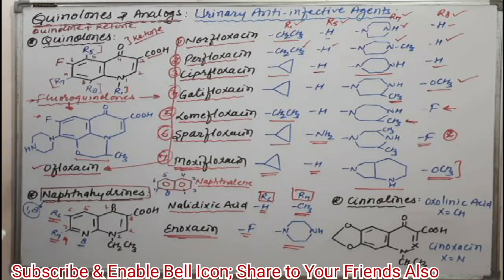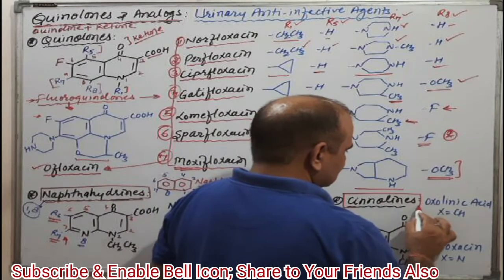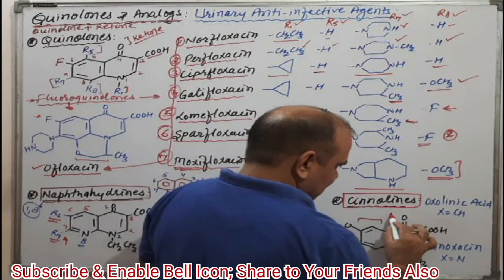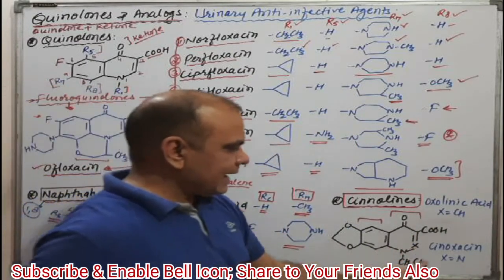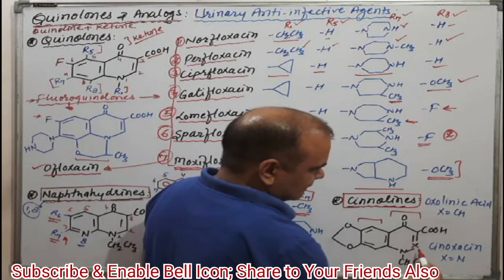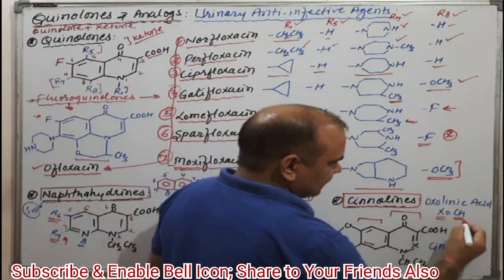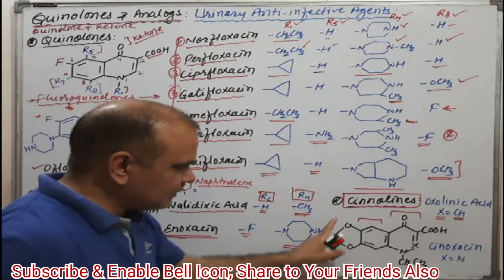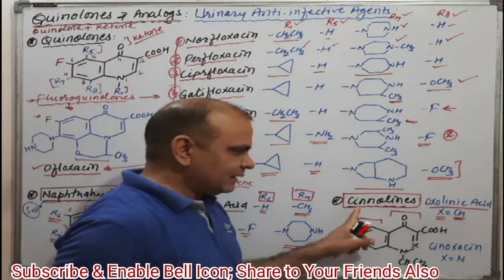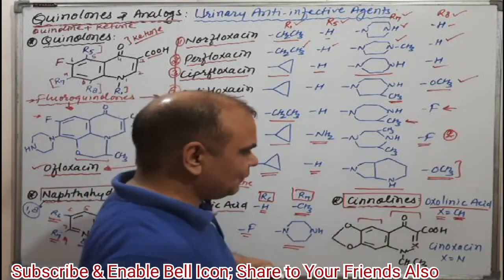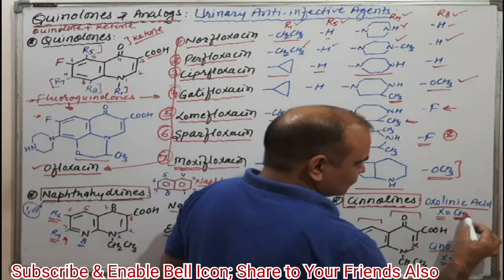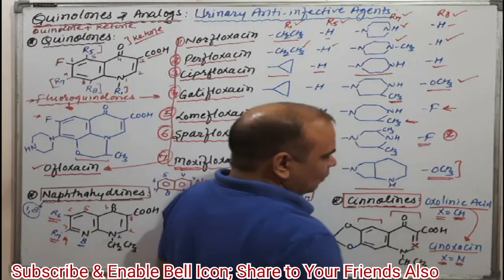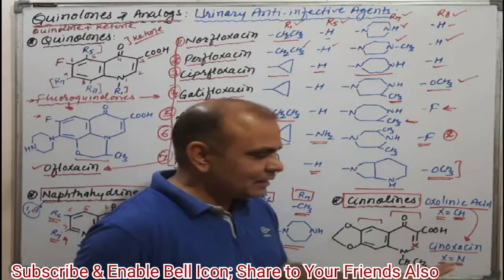This is all about the naphthyridine derivatives. The last category is cinolones. What is cinolones? The structure is similar to fluoroquinolones, but here X is a different one. In the base structure (oxolinic acid), X is CH. When X equals nitrogen, that converts oxolinic acid into cinoxacin — the balances are completed by double bonds and single bonds. That is the cinolone category.